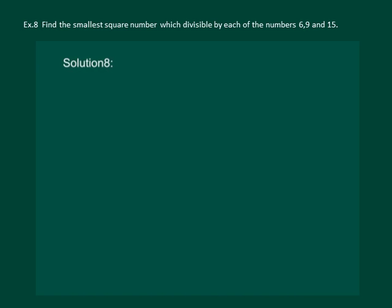Let us read the question. Find the smallest square number which is divisible by each of the numbers 6, 9, and 15.